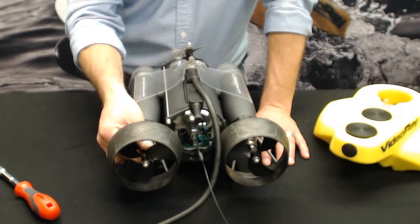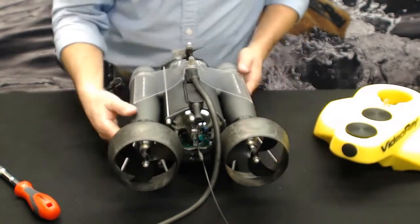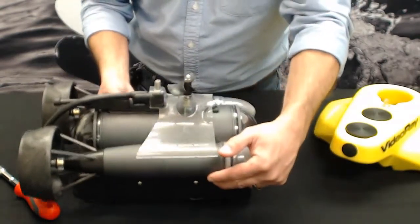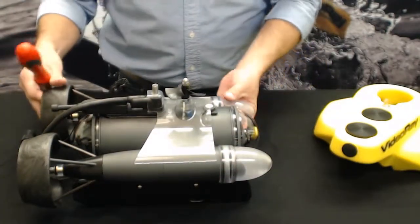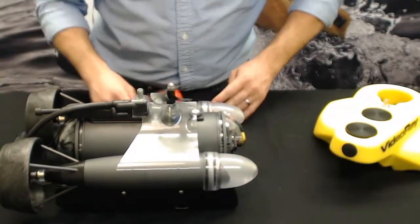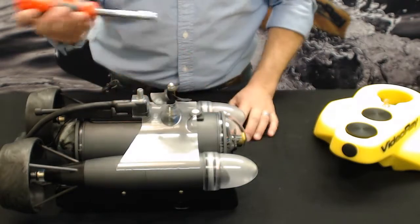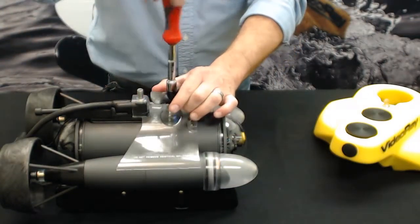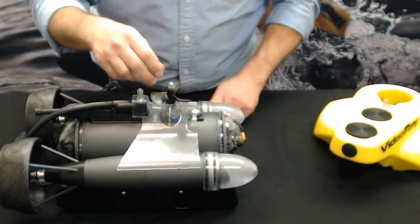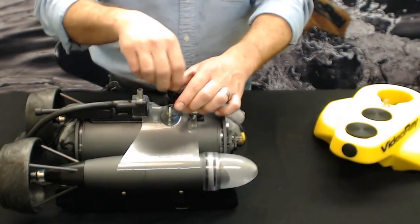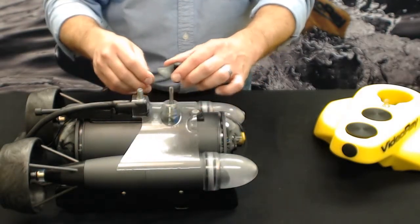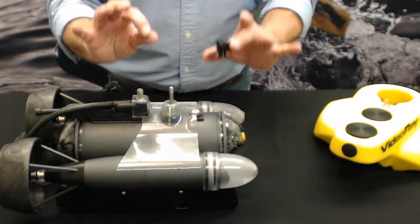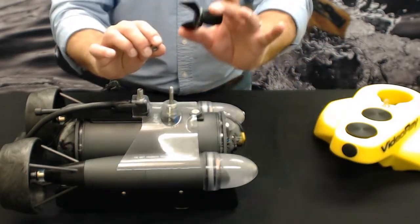We'll just do the top one real quick here. There's one more additional step in this. Same idea, 7/16ths wrench, grab it so the prop doesn't spin. It shouldn't be very difficult to get it off at all. Same thing, three pieces: acorn nut, propeller, and the collet.